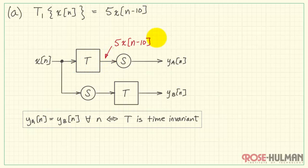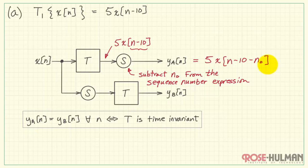X of n passes through our system to produce 5 times X of n minus 10. Then when it passes through the shift operation, we subtract n0 from the sequence number expression, whatever that happens to be. In this case, it's n minus 10.